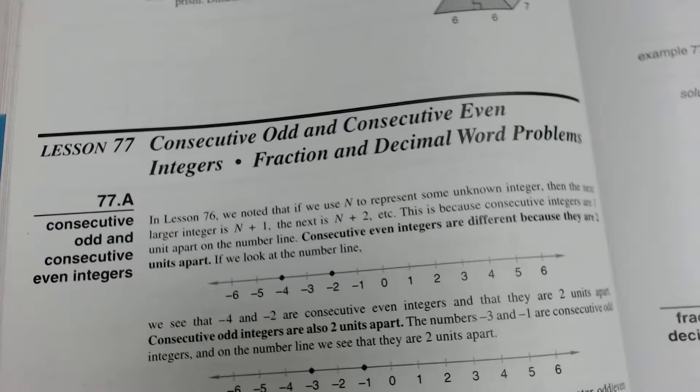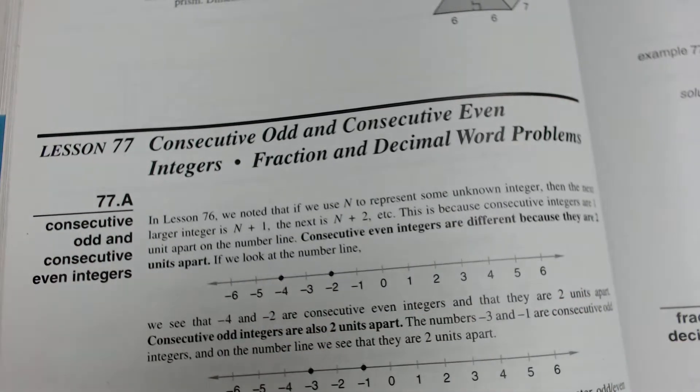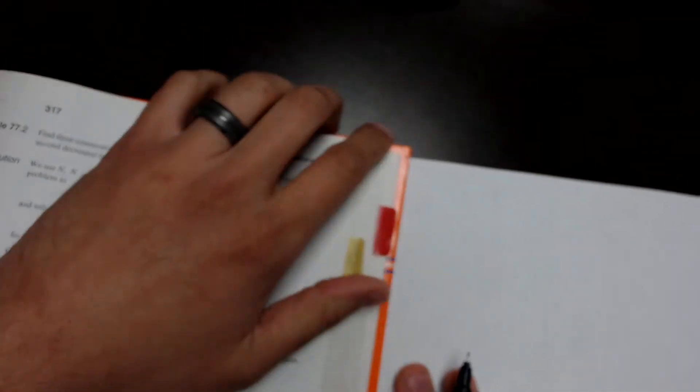Now, there's a common mistake that people try to make with consecutive odd and even integers. Before we do that, let's just do a quick recap on consecutive integers, you know, like 1, 2, 3, 4, 5, 6, 7, 8.